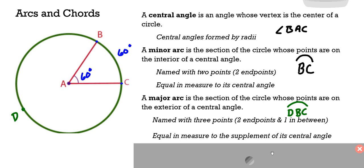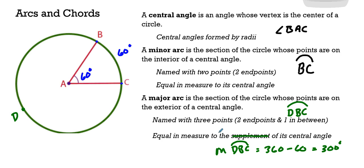And the measure is not the supplement of its central angle. It's 360 minus, in this case, 60 or 300 degrees. So it's the difference between the measure of the central angle and 360. 360 is a full rotation, so you take away the central angle from that and you have your arc measure.